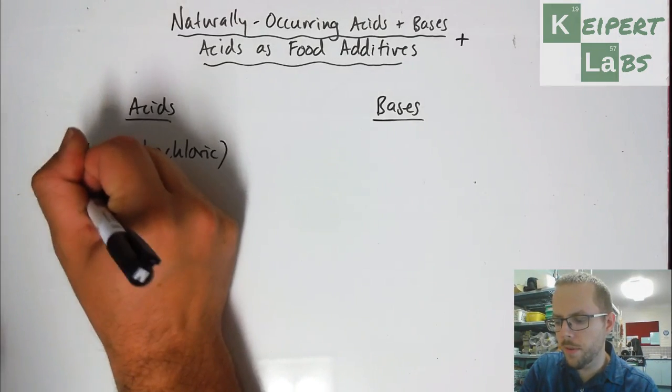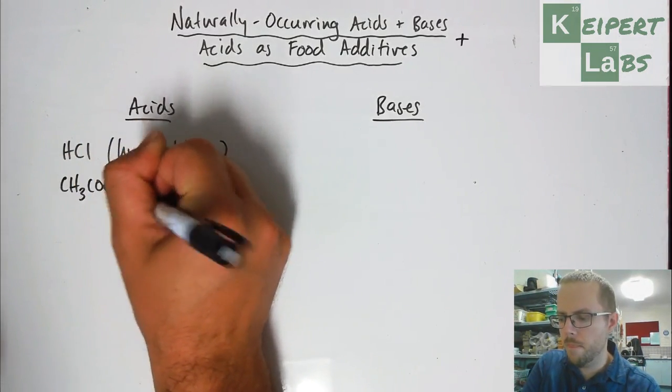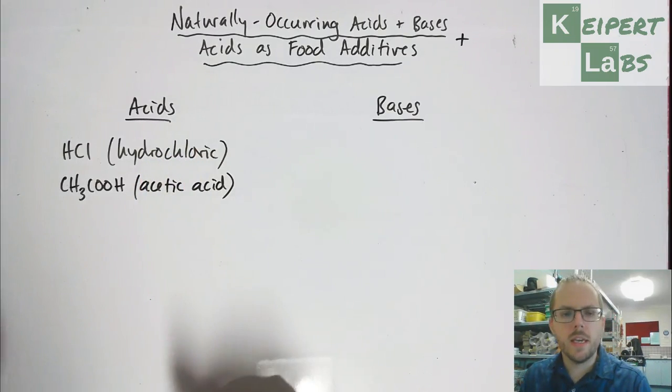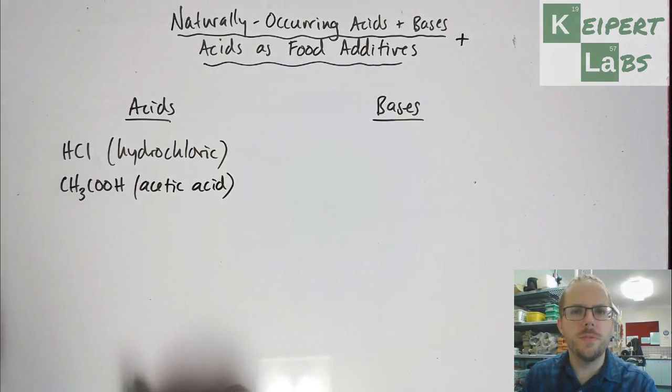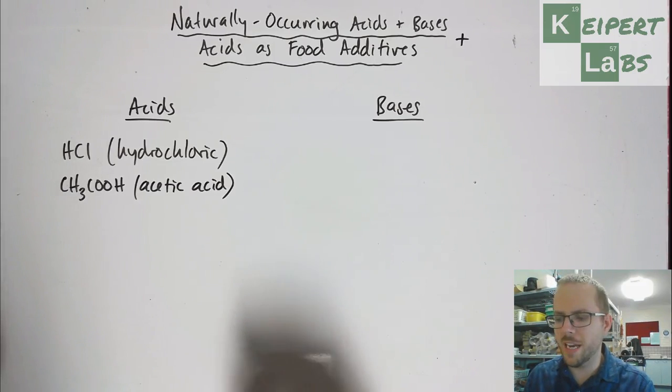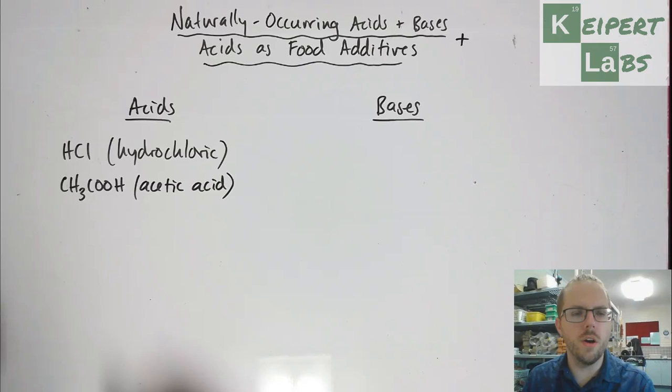We have acetic acid. So which is the component of vinegar, which is a naturally occurring substance that comes from oxidation of the sugars and the alcohol present inside things like grapes.